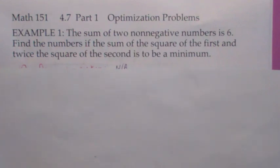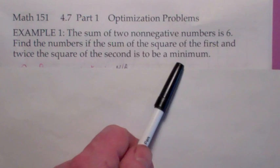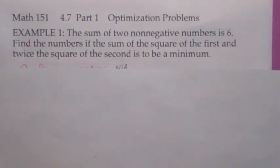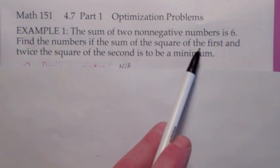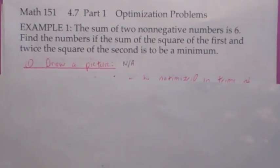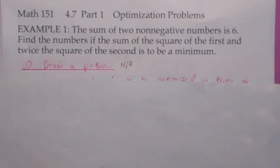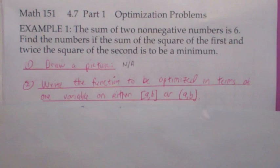Let's take this first example. You're given that the sum of two numbers is 6, and you want to find the numbers if the sum of the square of the first plus twice the square of the second is to be a minimum. Oftentimes a picture is a good idea, but not in this case.